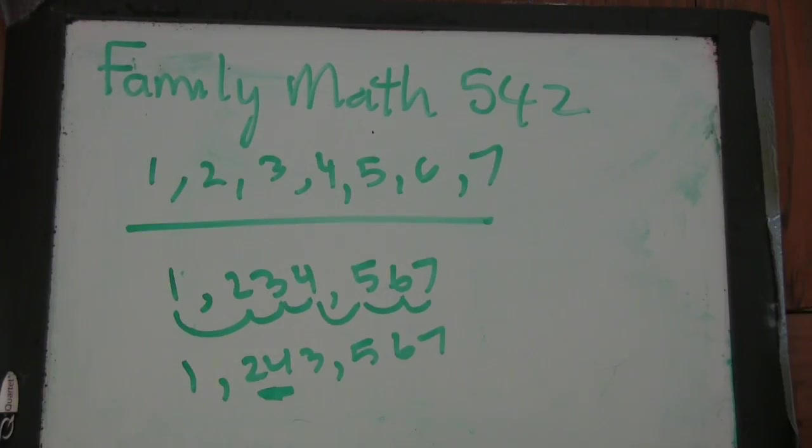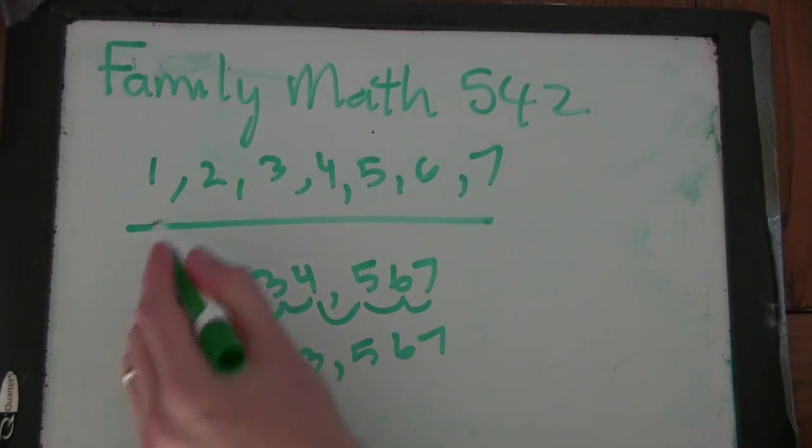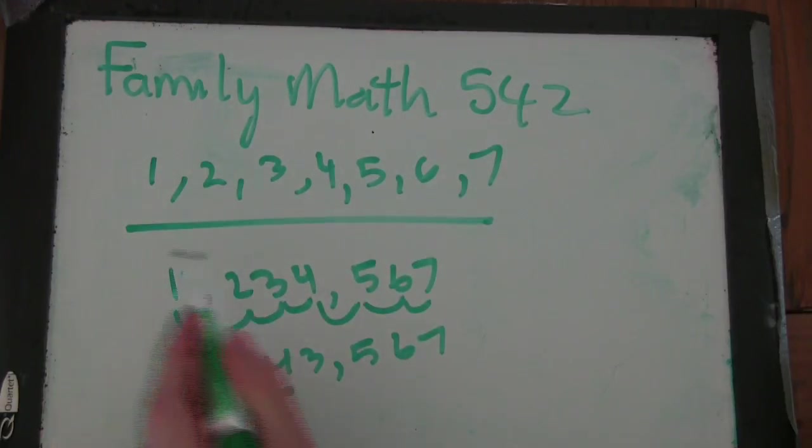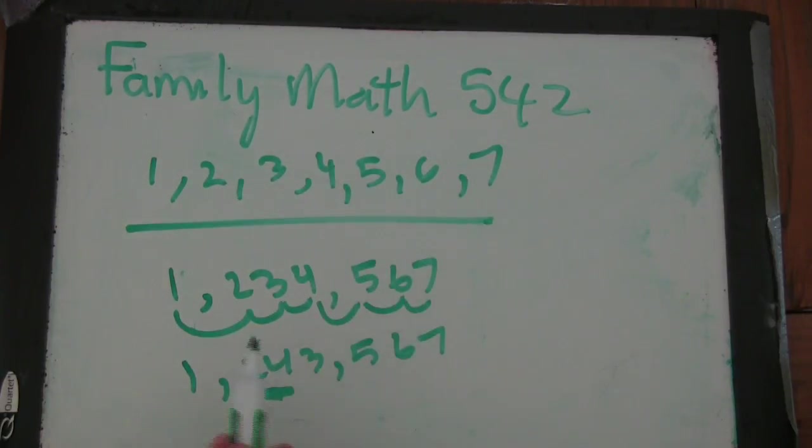And the question is, how many numbers are there like this? So using the digits 1 through 7, you form exactly once each, form a seven-digit number. No two consecutive digits have common divisors.